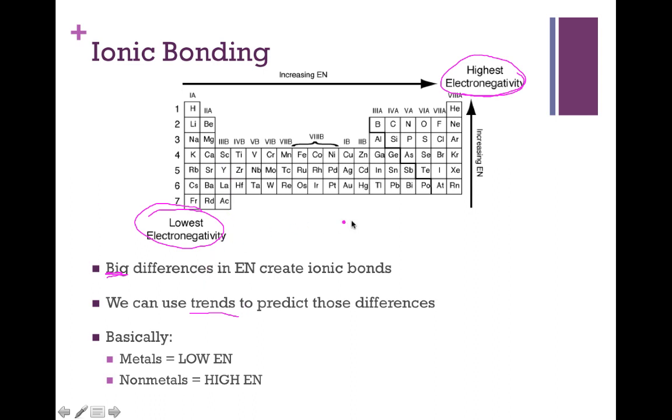Metals, which are the elements on the left side of the periodic table, separated by this line right here, tend to have very low electronegativities, whereas non-metals on this side of the periodic table tend to have very high electronegativities. The end result we can say here is that ionic bonds are going to form between metals and non-metals.